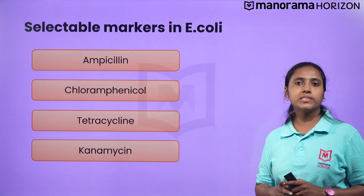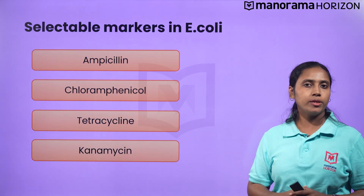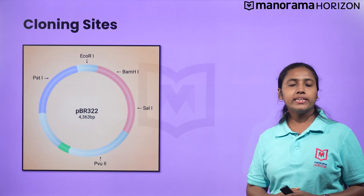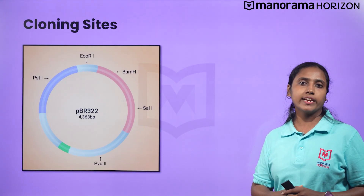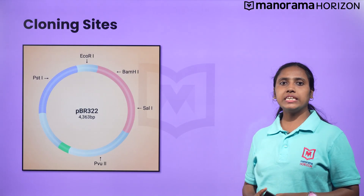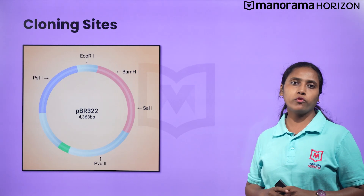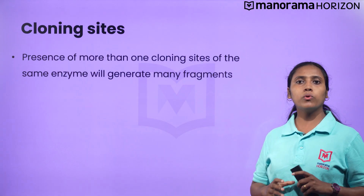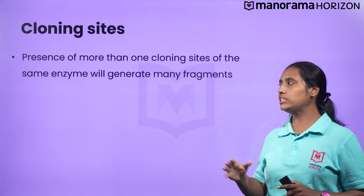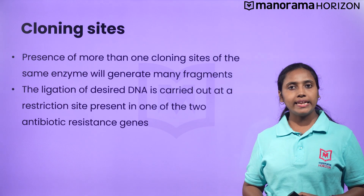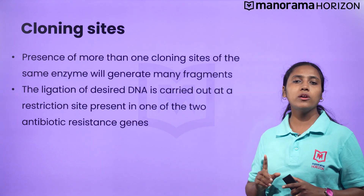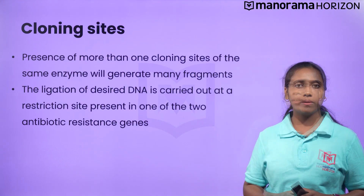The third feature is cloning sites. To link the desired DNA, the vector needs to have a single recognition site for commonly used restriction enzymes. As you can see in the image, there is only one site for EcoRI. The presence of more than one recognition site within the vector will generate several fragments, which will complicate gene cloning. The ligation of desired DNA is carried out at a restriction site present in one of the two antibiotic resistance genes.